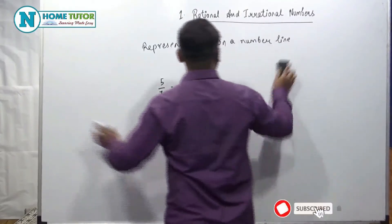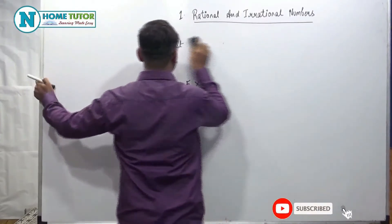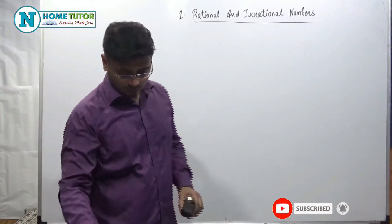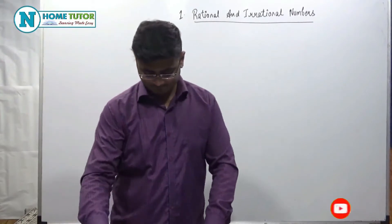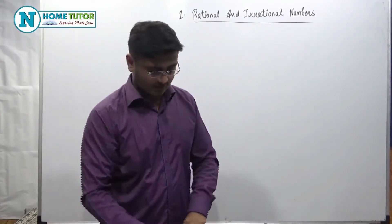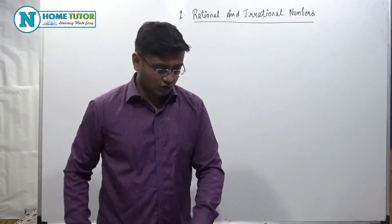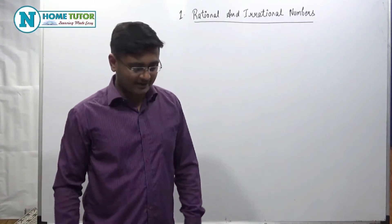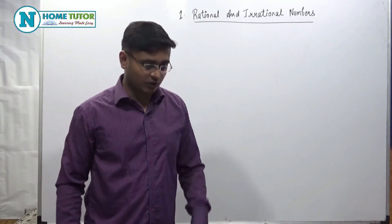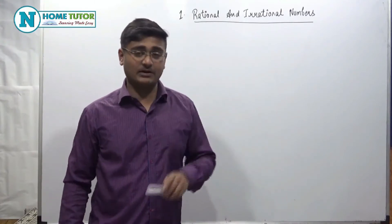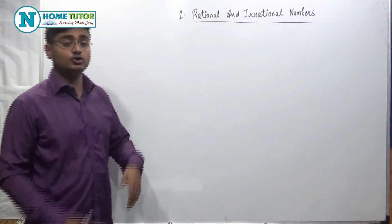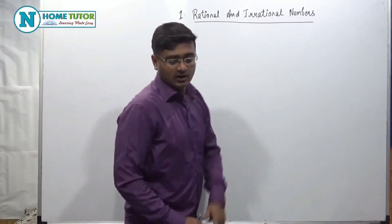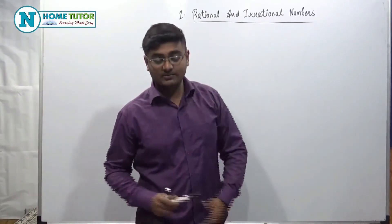Let's go to your exercise and see what other kinds of questions can be asked. The first question is: show the following numbers on a number line, and draw separate number lines for each example. There are some examples given and you need to draw the number line for the following rational numbers.